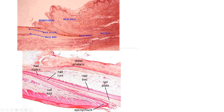Another picture going the opposite way — kind of upside down — where the part you would see is right here. Here's the root of the nail underneath the skin, here's your cuticle or eponychium, the matrix is here where the cells divide, and then the nail bed and plate. The free edge would be out here.